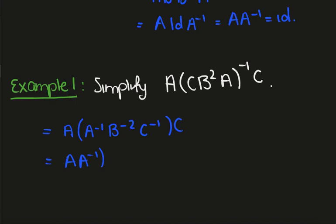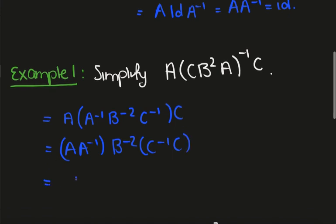This is A A inverse times B to the minus 2 C inverse C, which is just the identity times B to the minus 2 times the identity, which is B to the minus 2.